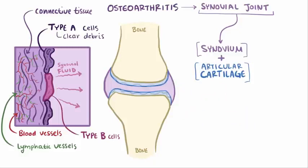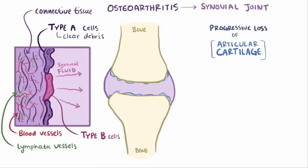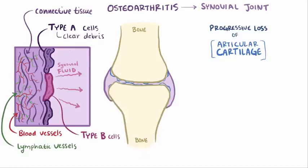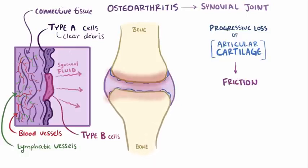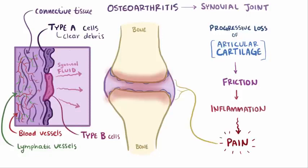One of the main issues in osteoarthritis is the progressive loss of this articular cartilage, which means there's not much separating the two bones anymore, which adds a significant amount of friction between them, which then generates inflammation and triggers pain through the nerve endings in this joint space.